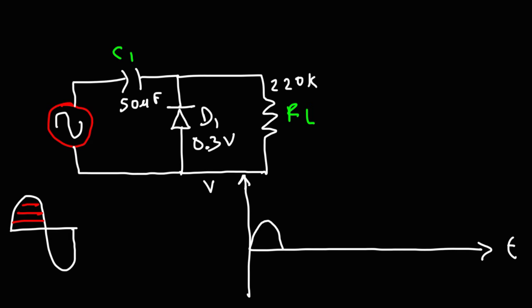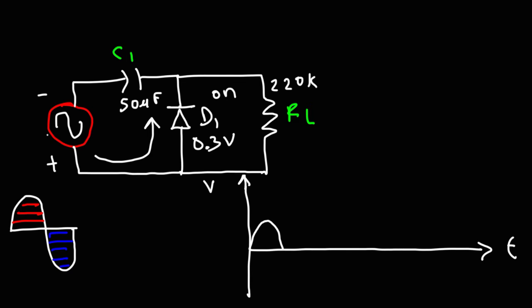During the negative half cycle, the polarity reverses and D1 turns on. Current flows through D1, which acts like a short circuit with a voltage drop of 0.3 volts. The capacitor charges quickly during this part because the diode resistance is very low, allowing large current flow. So C1 charges very fast. The voltage across RL during this time is just the diode voltage — 0.3 volts.